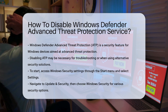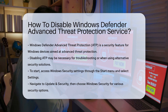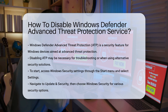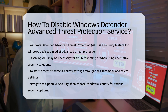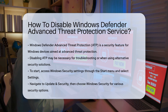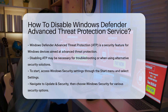To begin, access the Windows Security settings. Click on the Start menu, then select Settings. From there, navigate to Update & Security and choose Windows Security. This section provides various security options.